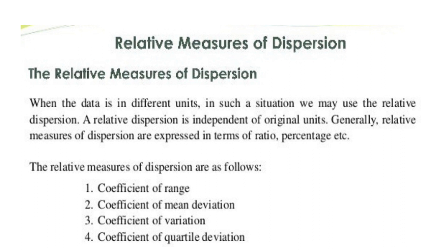The relative measures of dispersion are: coefficient of range, coefficient of mean deviation, coefficient of variation, and coefficient of quartile deviation. When they are asking measures of dispersion for five marks, you have to explain each — range, standard deviation, variance, mean deviation, and quartile deviation.